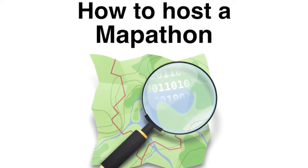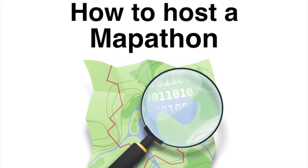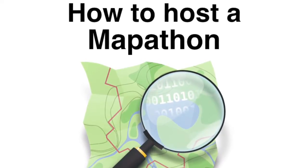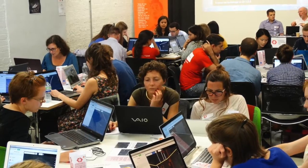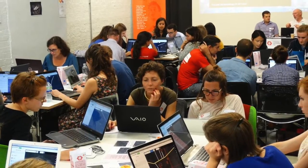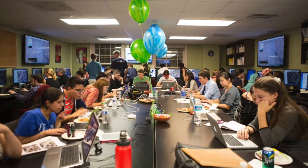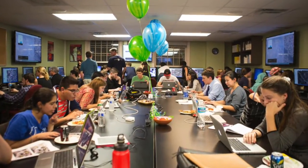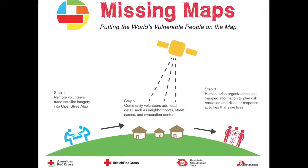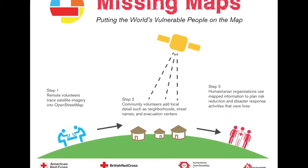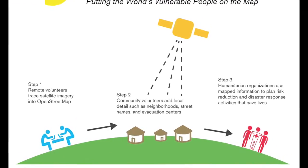An OpenStreetMap mapathon is a way to bring people together to work on improving OpenStreetMap. Mapathons are often known for humanitarian efforts, like the Missing Maps Project, where volunteers and humanitarian groups map out vulnerable areas before a disaster or crisis occurs to reduce risk and help speed recovery.